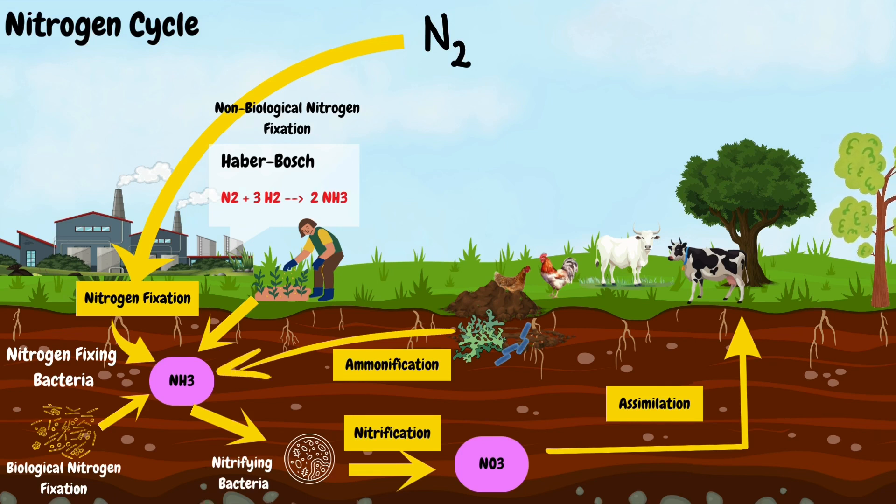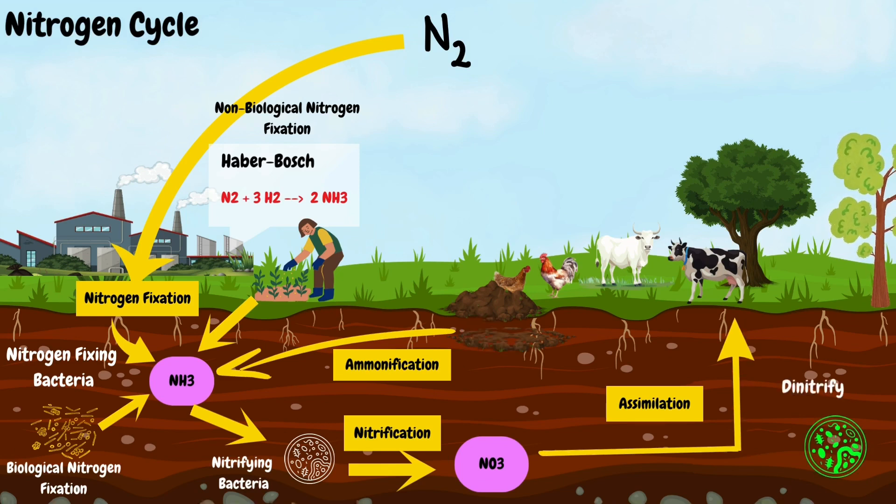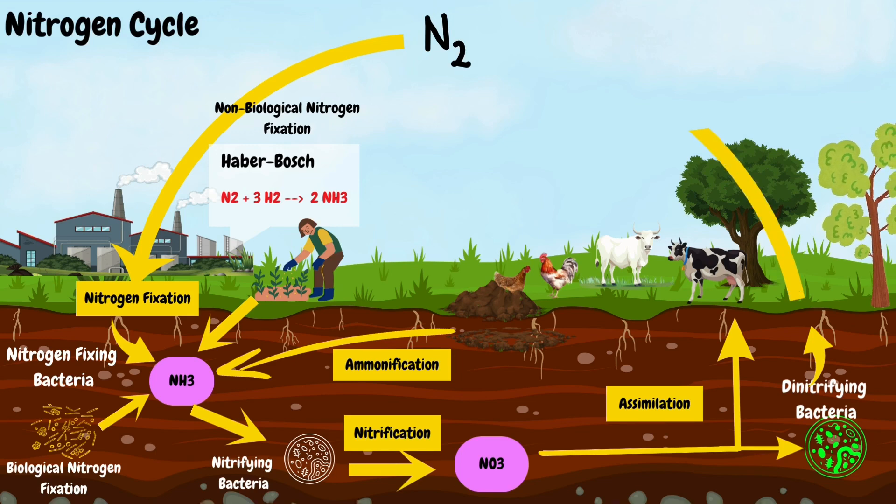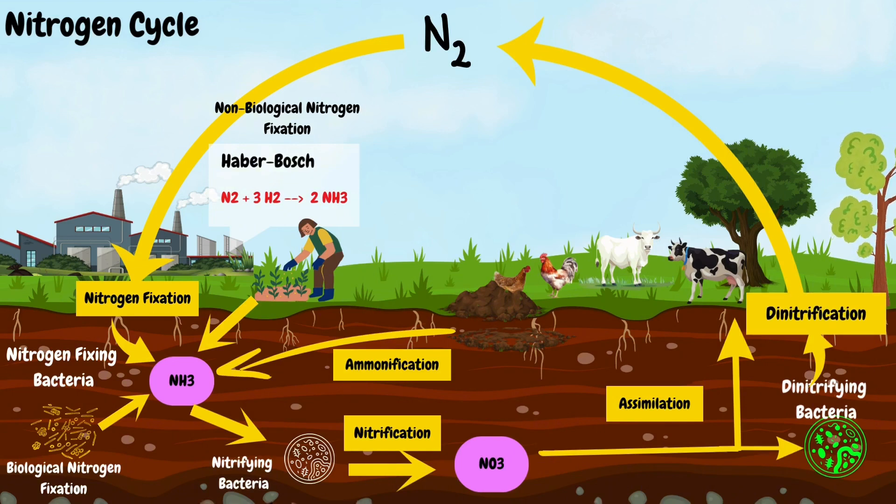Finally, denitrifying bacteria convert nitrate ions back into atmospheric nitrogen gas in anaerobic conditions through a process known as denitrification, completing the nitrogen cycle.